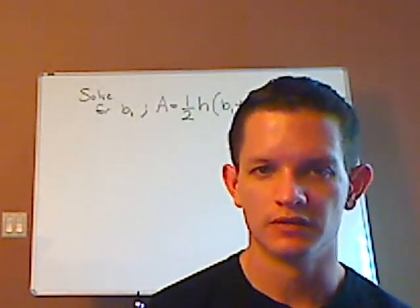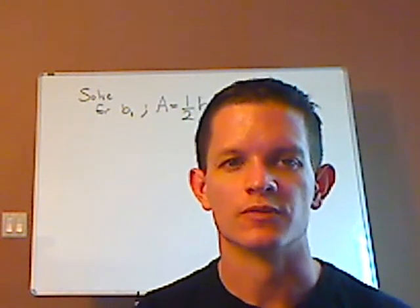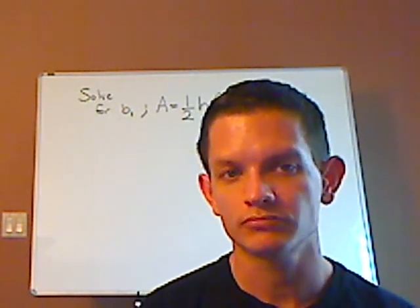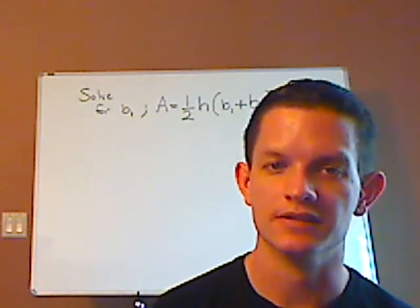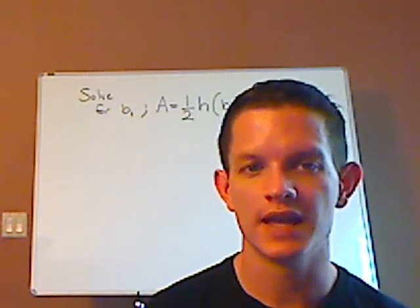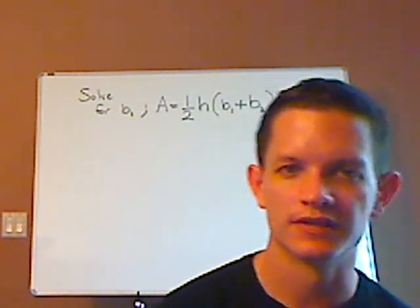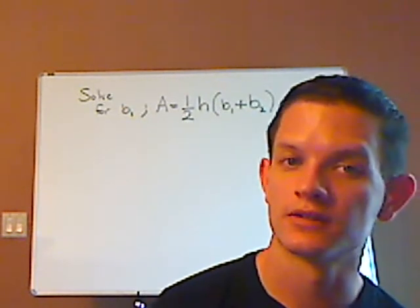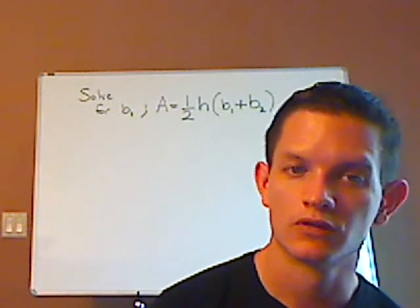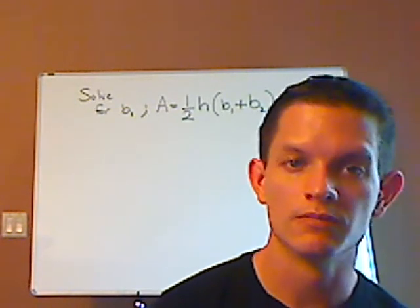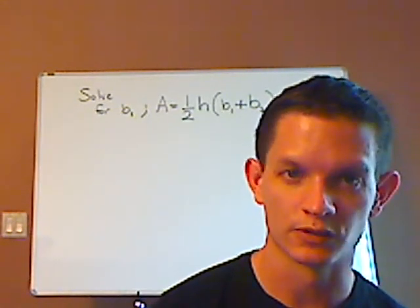So if you would, let me first read it to you and then you can try something on your own. Solve for B1 in the equation for the area of a trapezoid which is A equals one half times height times parentheses B1 plus B2 close parentheses. So if you would, pause the video and see if you can try this one on your own.